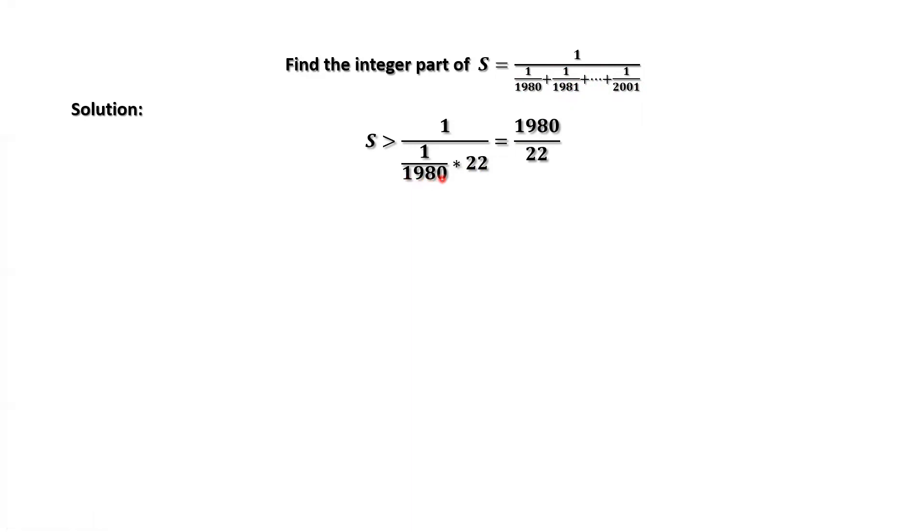Therefore, S is bigger than 1 over 1980 times 22, which is 1980 divided by 22. This equals 90. Therefore, S is bigger than 90.